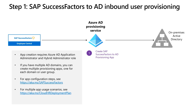Let's start with step one. In this step, we will log in to the Entra admin portal and create the SuccessFactors to AD user provisioning app from the Enterprise app gallery. If you have multiple AD domains to manage, you can create multiple provisioning apps, one for each AD domain.